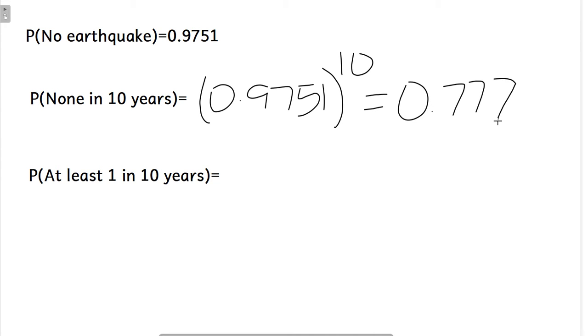Let's just call it 0.7777. Okay, we've got a 1, 2, 6. So 1, 3, okay? All right, so that's the probability that there's none in 10 years.